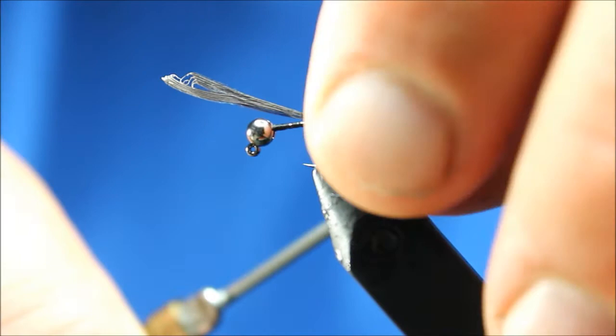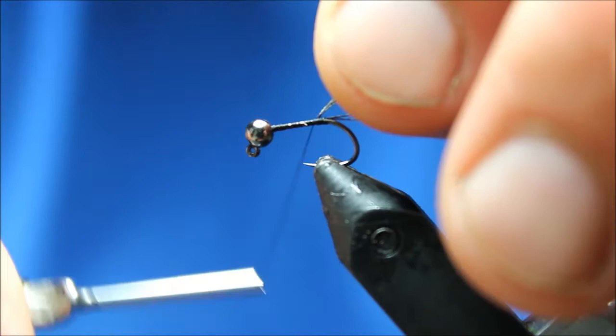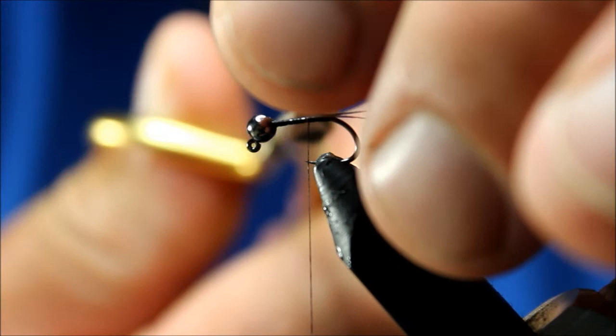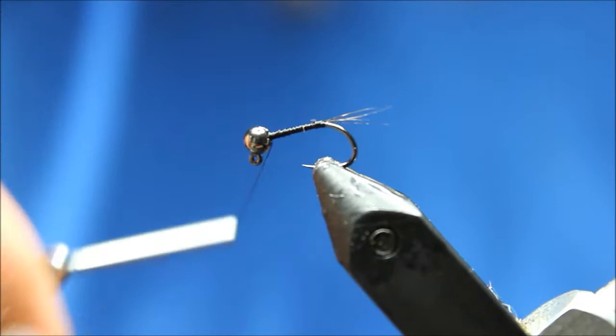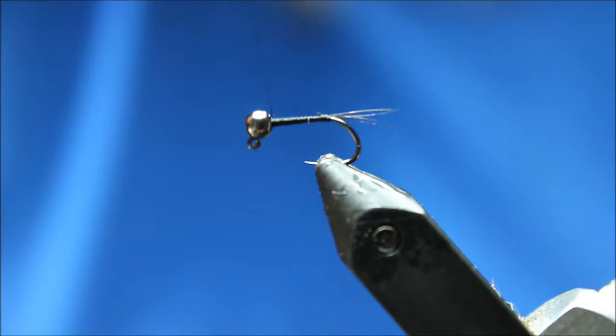Some people get real picky, like Scott Brown, about the exact length of the tails. I can tell you from my experience the fish don't really notice if it's exactly half a shank, three quarters of a shank, etc. So I eyeball it.